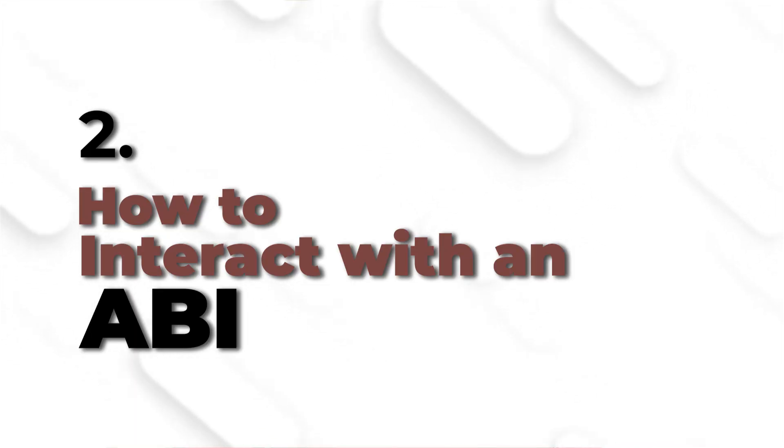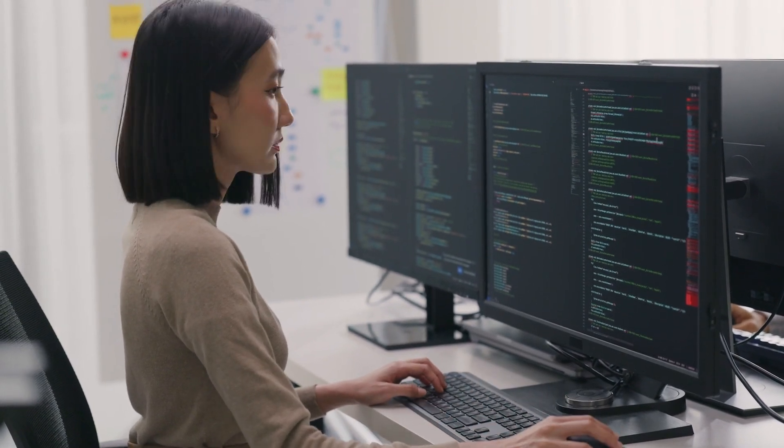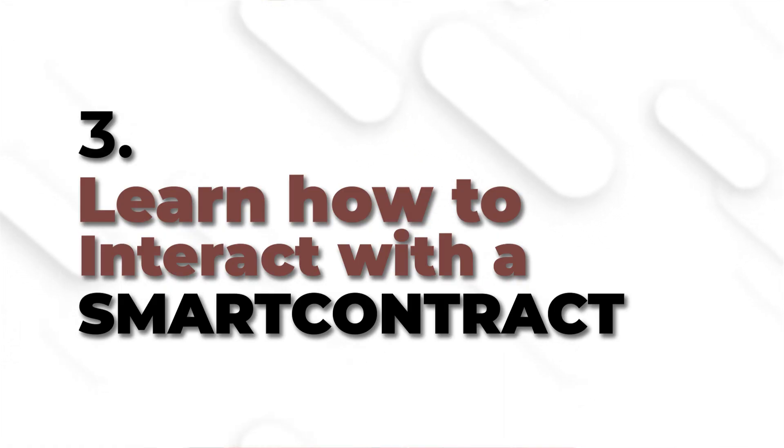After mastering wallet connectors, the next thing is learning how to interact with an ABI. An ABI is a JSON file that shows you the different methods and functions that exist in a smart contract. This is very important because if you're going to be interacting with smart contracts you need to know the functions available. When working with a smart contract developer, they will send you the ABI and you'll integrate it into your dApp. Also learn how to interact with a smart contract even without an ABI, using tools like Ethers.js or Viem — learn how to read and write from a smart contract.